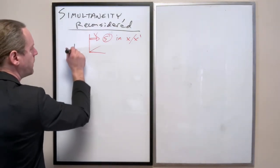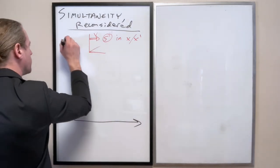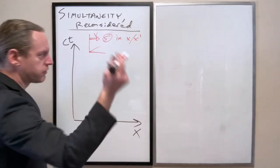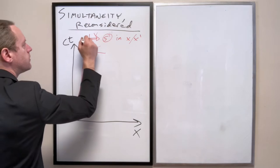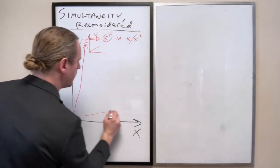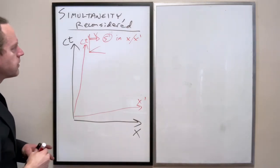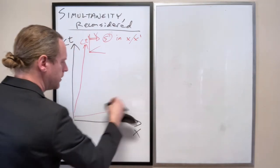And that means that our normal Minkowski diagram is going to look like this. It's ct x, and I'm going to use red for the moving frame. We now have our ct prime and our x prime. And I'm going to make these a little bit exaggerated.